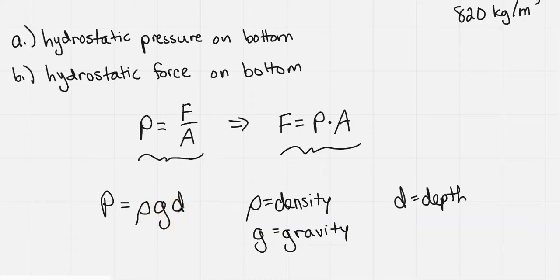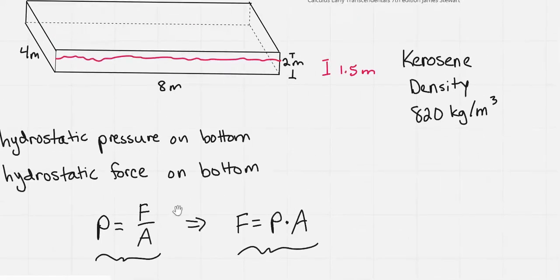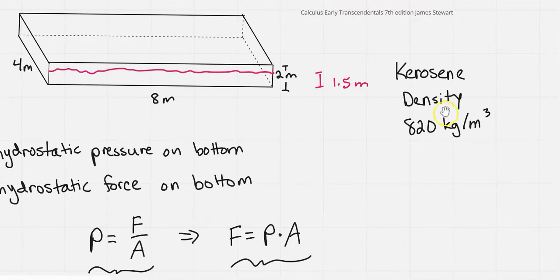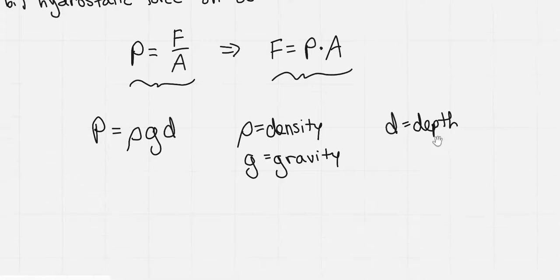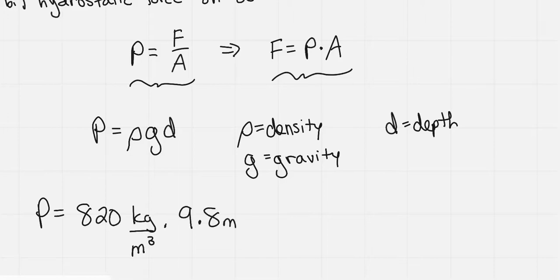We have this rho times G times D, and we're going to figure out what are rho, G, and D in this problem. So since rho is the density of the liquid, that's something we either have to look up or be given. In this case, it's kerosene, and they give it as 820 kilograms per meters cubed. And then gravity, we know that to be 9.8 meters per second squared.